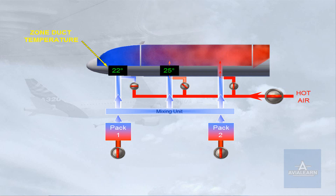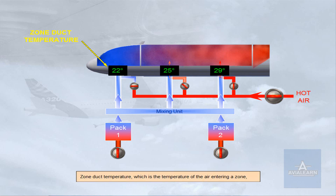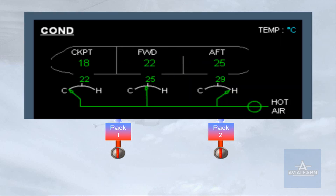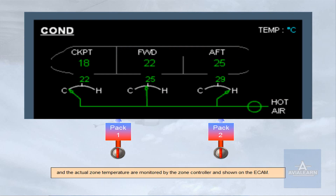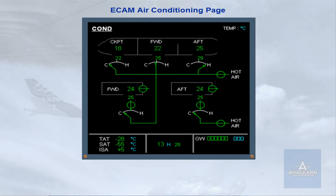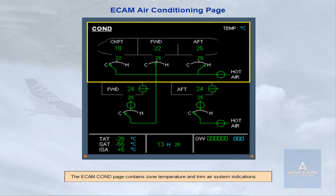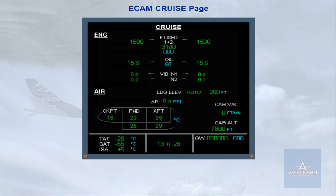Zone duct temperature, which is the temperature of the air entering a zone, and the actual zone temperature are monitored by the zone controller and shown on the ECAM. The ECAM COND page contains zone temperature and trim air system indications. The ECAM Cruise page also contains zone temperature indications.